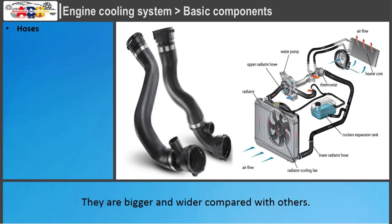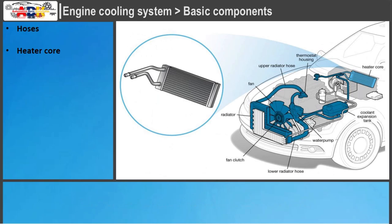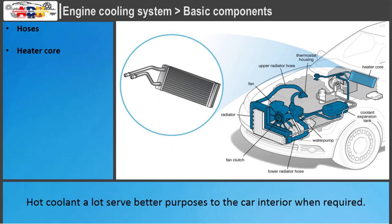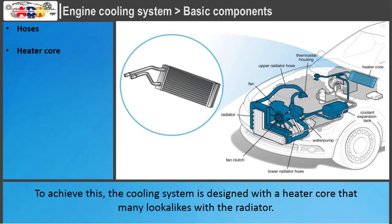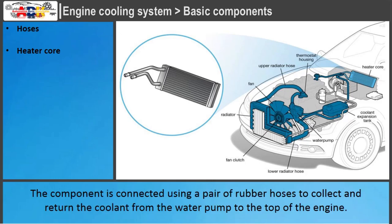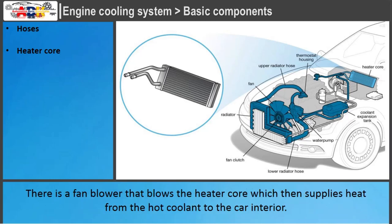The main hoses are known as the upper and lower radiator hoses, which are bigger and wider compared with others. Heater core: Hot coolant serves useful purposes for the car interior when required. The cooling system is designed with a heater core that looks similar to the radiator. It is connected using a pair of rubber hoses to collect and return coolant from the water pump to the top of the engine. A fan blower blows the heater core, supplying heat from the hot coolant to the car interior.